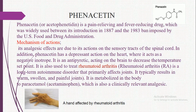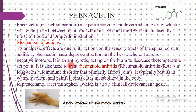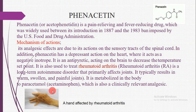Negative inotropes weaken the force of the heartbeat — the force of contraction decreases — while positive inotropes strengthen it. Phenacetin is also antipyretic, acting on the brain to decrease the temperature set point. It is used to treat rheumatoid arthritis, a long-term autoimmune disorder that primarily affects the joints, causing swollen and painful joints. It is metabolized in the body to paracetamol (acetaminophen), which is also a clinically relevant analgesic.